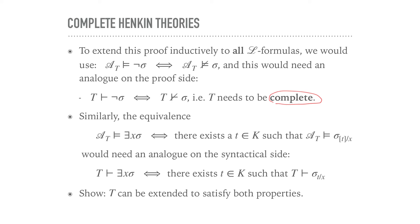Now, similarly, the equivalence in the inductive step, we would extend in another inductive step to formulas with an existential quantifier. And here we would use the equivalence that AT satisfies exists x σ if and only if there exists a term in K such that AT satisfies σ, if I plug in, if I evaluate the variable x as the equivalence class of the term t. So this, again, would need an analog on the syntactical side. And in that case, it would be T proves there exists x σ if and only if there exists a term in K such that T proves σ with t substituted for x.